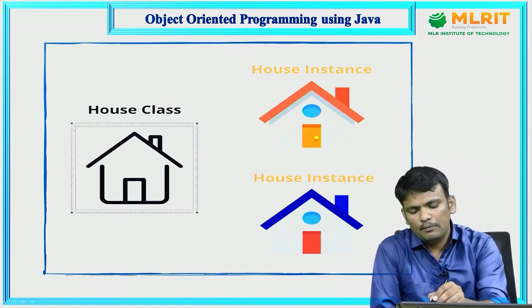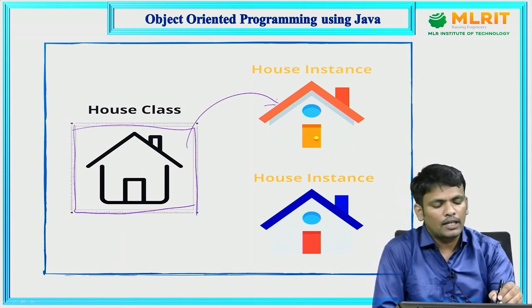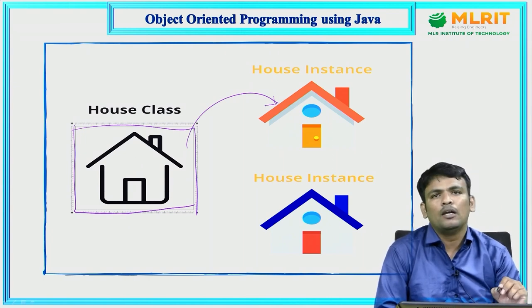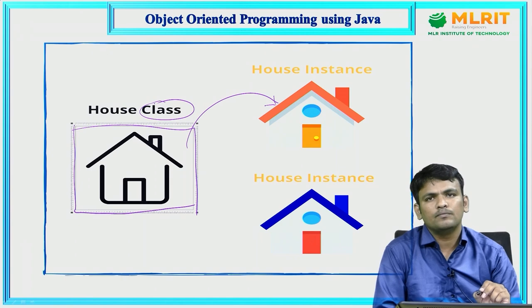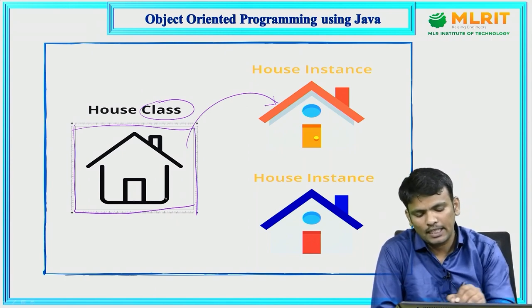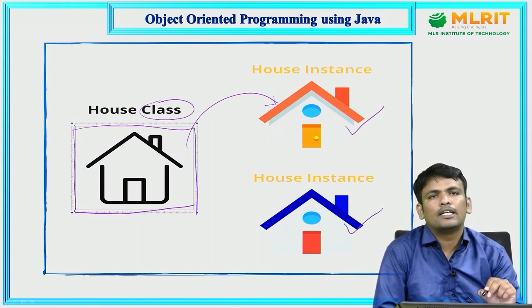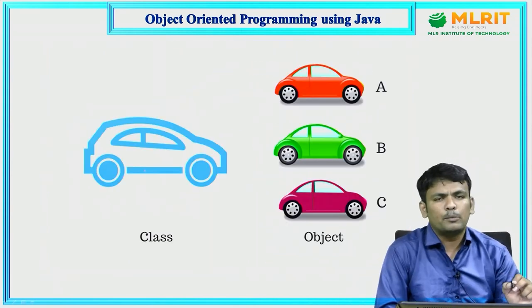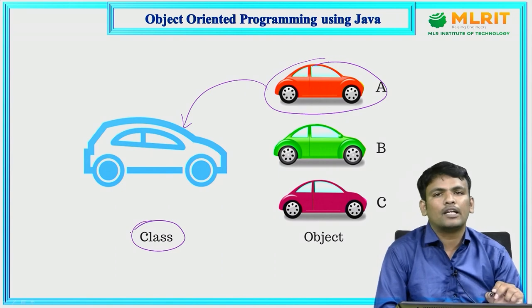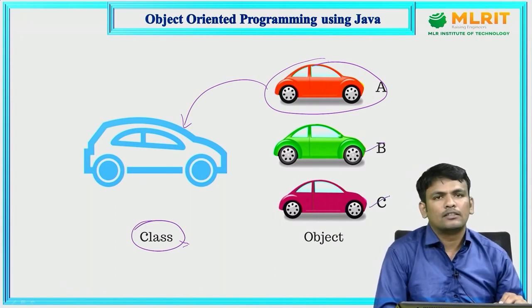Based on one plan (class), you can construct any number of objects. For example, here the plan is the design part and a real house is the object. Another example: if you want to manufacture a car, you first need a design (class). From one class, you can create n number of objects — like a red car, green car, and purple car.